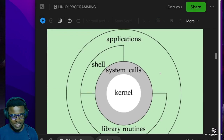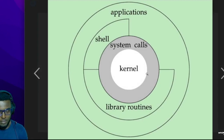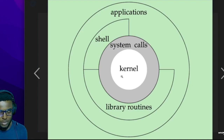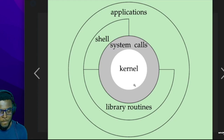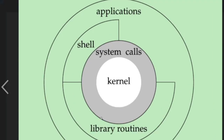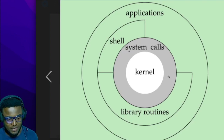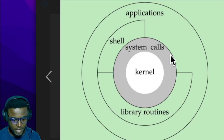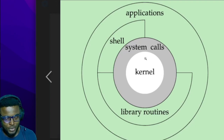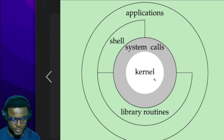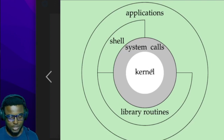Here is a more detailed version — take a look at this critically. We have the hardware as the central foundation on which everything is built, then the kernel. As part of the kernel there are system calls. The shell can pass commands to the kernel through system calls, which are mechanisms used by user-space processes to request services and resources from the kernel. There are also libraries and applications that can talk to the kernel directly, while others go through the shell first.